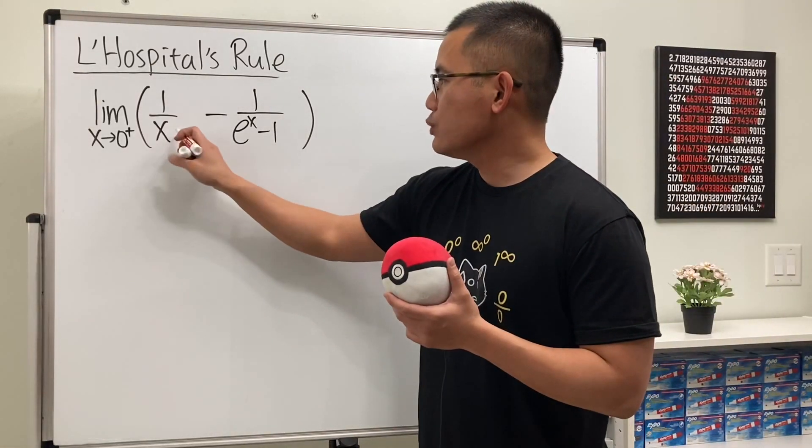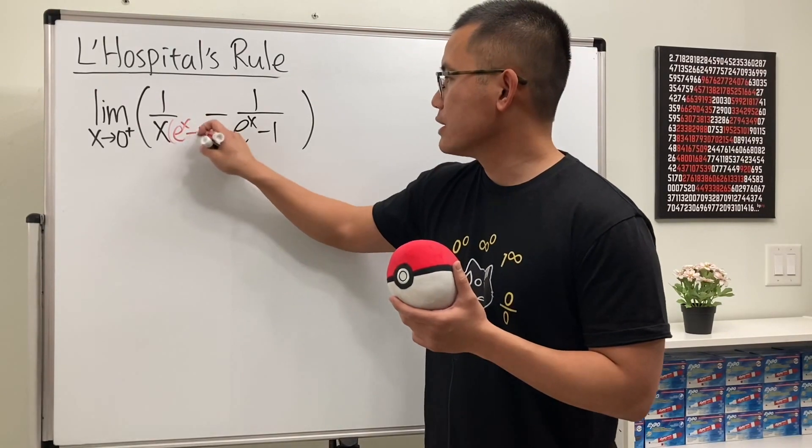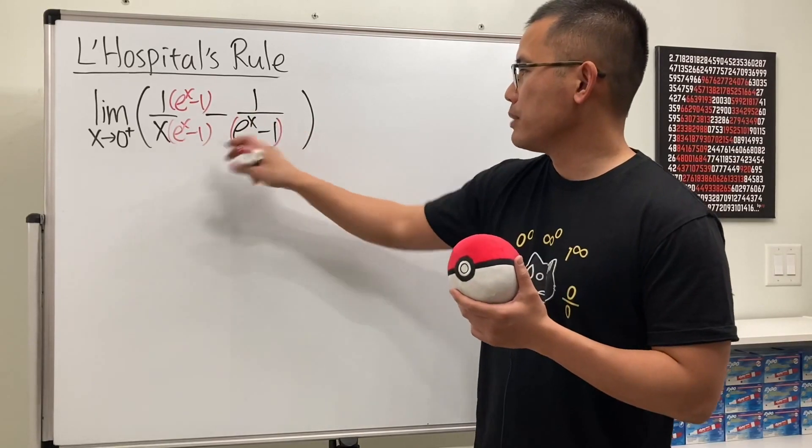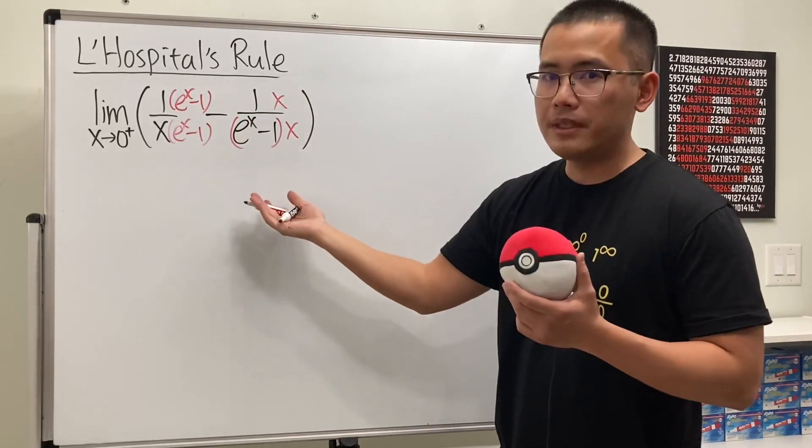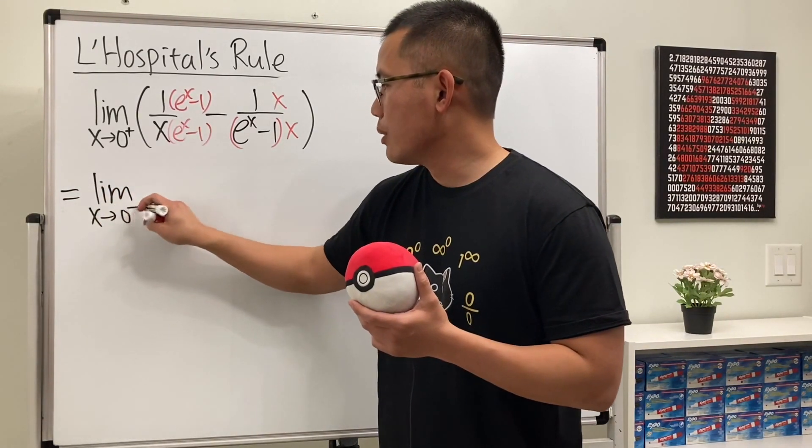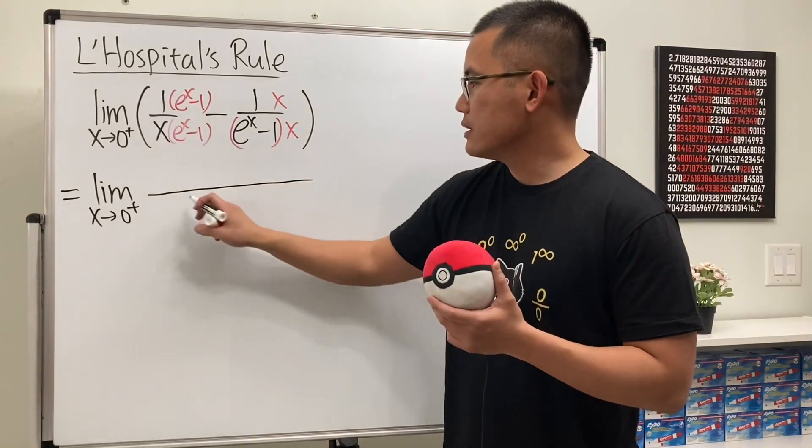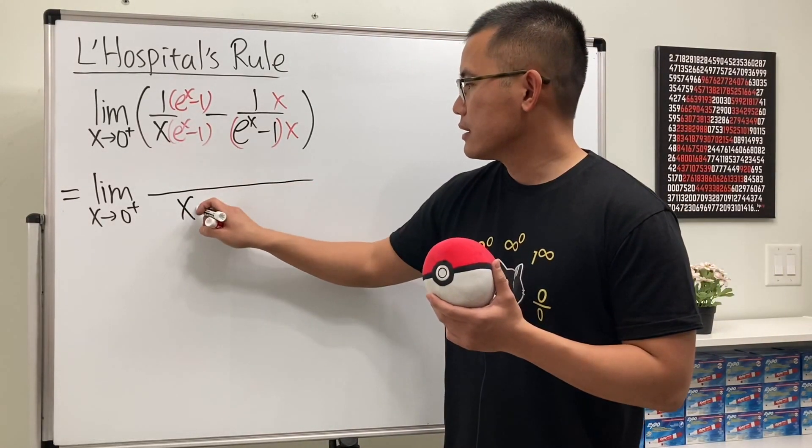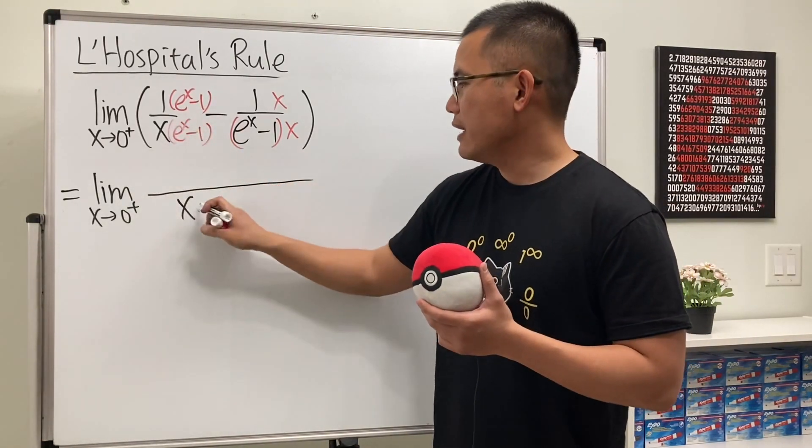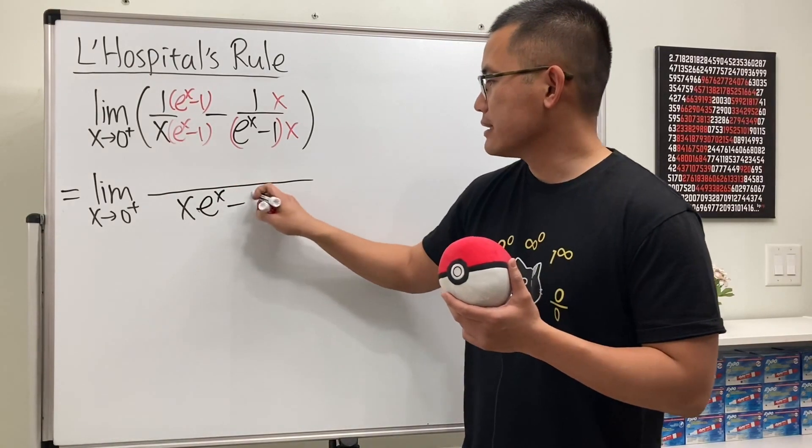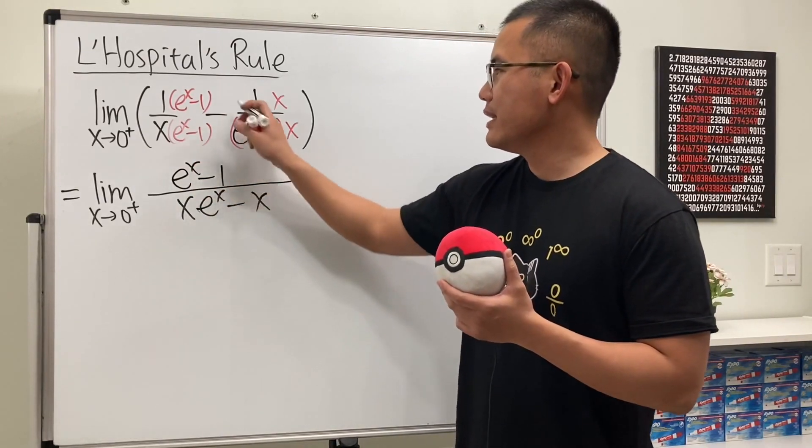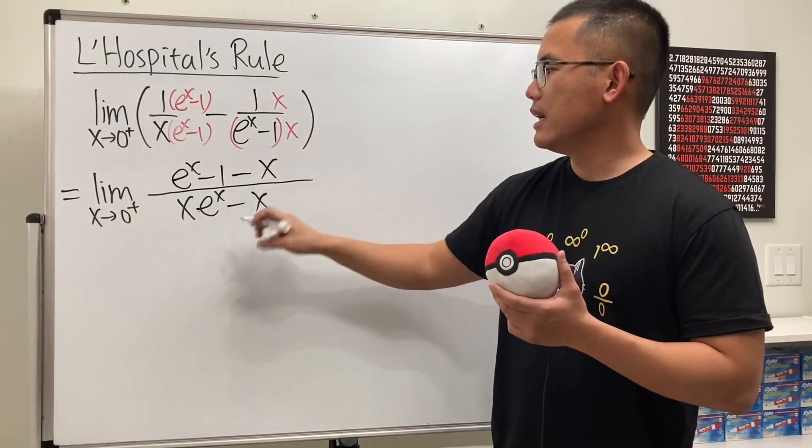So let's multiply this one by e to the x minus 1, and also e to the x minus 1. And then for the second one, we'll multiply the top and bottom by x so they will have the same denominator. And this is going to give us the limit as x approaching 0 plus. On the bottom, we have x. Let me multiply this out. So we have x times e to the x and then minus x. And then on the top, we have e to the x minus 1 and then minus x.